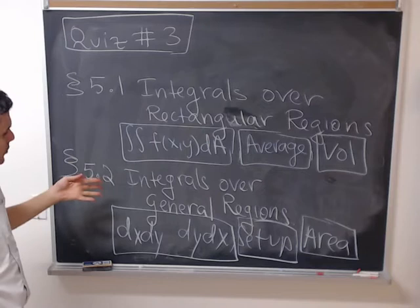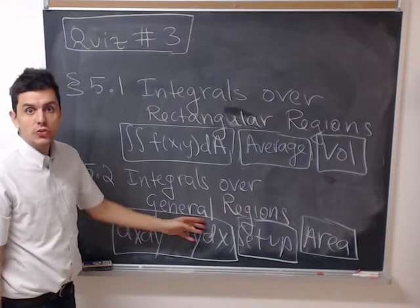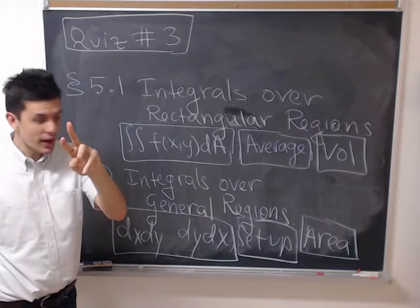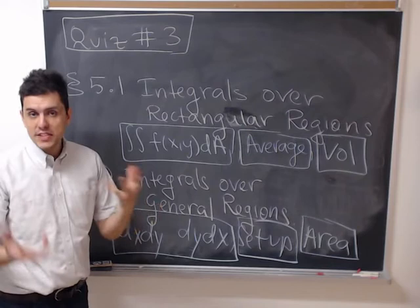Now for integrals over general regions, you can expect some kind of changing the order of integration. So dy dx to dx dy. Switching back and forth using Fubini's theorem.